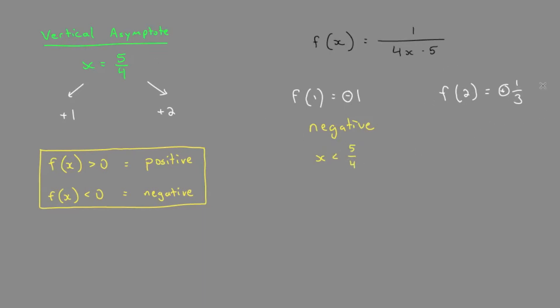On the right side of the asymptote, we got a positive value, therefore this is the positive interval. And it's positive in the region x is greater than our asymptote, 5 over 4.